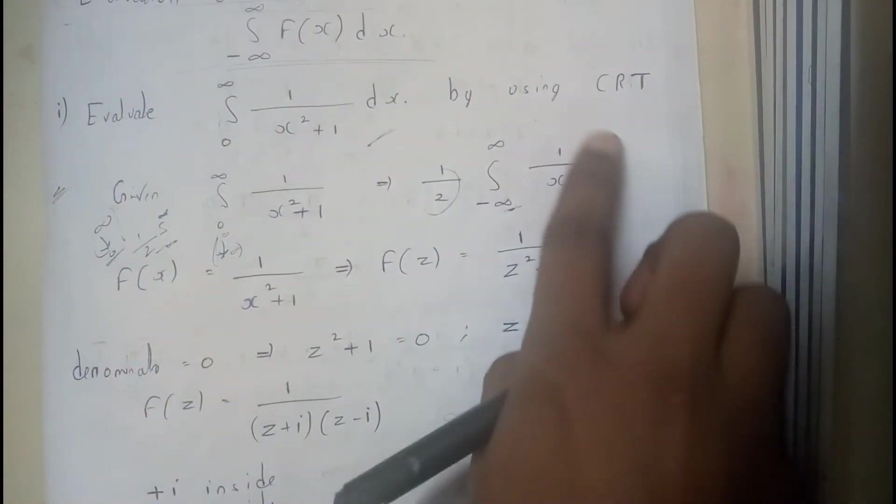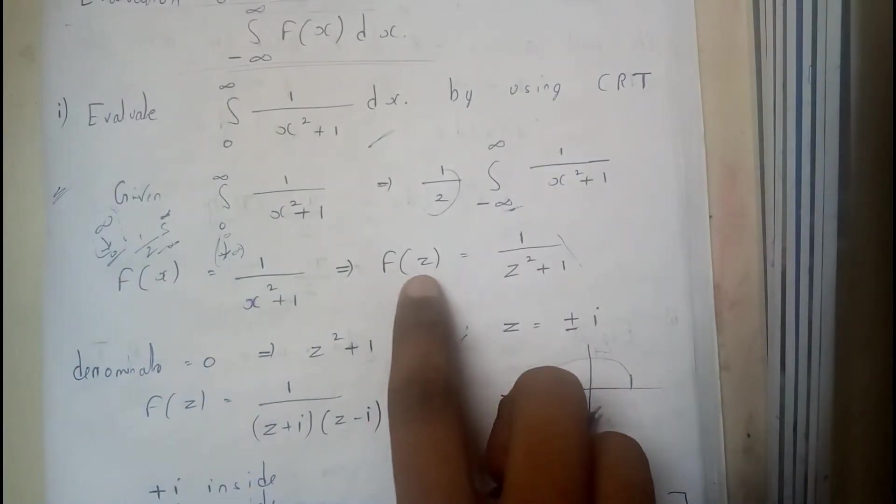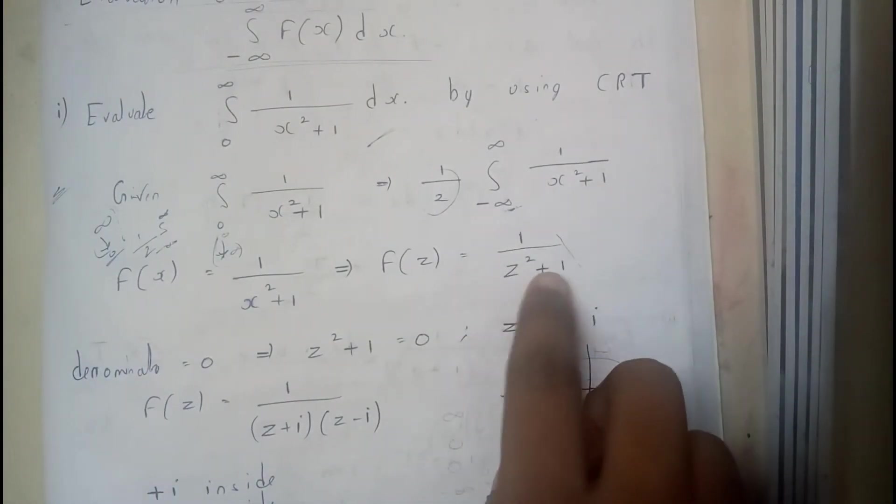So now I will be assuming this as f of x. So I will be changing the x with z. So f of z is equals to 1 by z square plus 1.